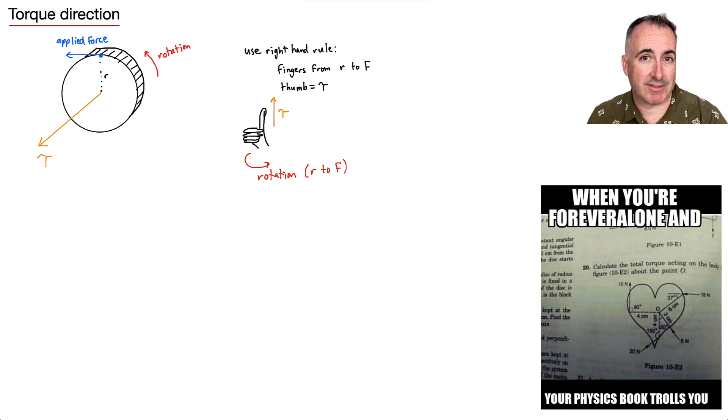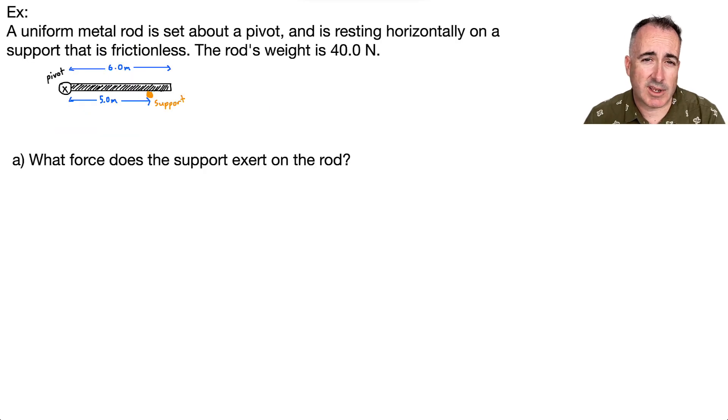So let's actually do an example where we have to calculate something. Let's look at a pretty tricky question. But if we can solve this, we can solve anything. We have a uniform metal rod. That means it's the same everywhere along the rod. And it's set about some sort of pivot here. And it's resting horizontally on a support that's frictionless. So here's a support. So if you see, it's kind of like my little pencil right here. It's kind of sitting right here on the support. Of course, if I let the support go, it's going to fall down. So that's what we're going to be looking at in part B. We're going to look at this right here is what's going on right now. So it wants to spin or wants to rotate, but this support is stopping it. So the question will be, what force does a support exert on the rod?